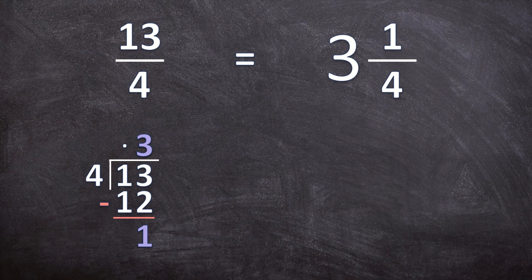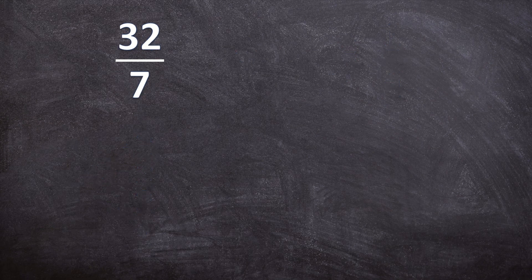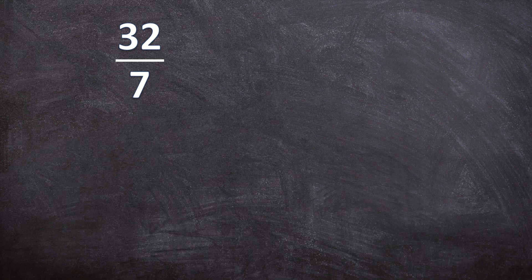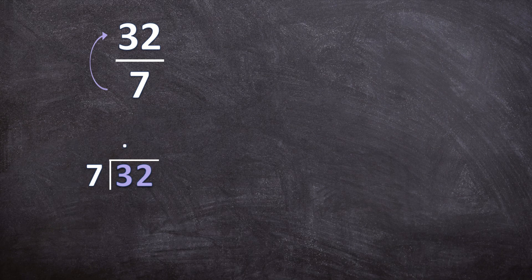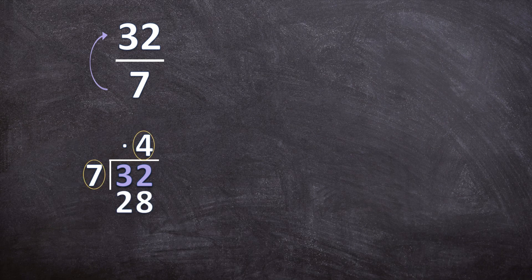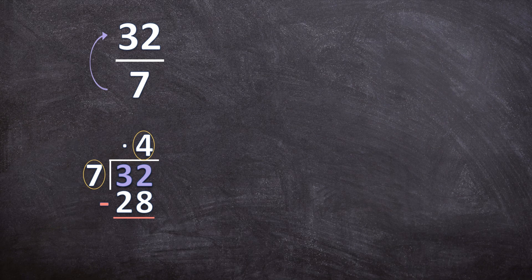Let's look at another example. Here we have 32 over 7. Again I'm going to do the division separately. So how many times can 7 go into 32? 7 cannot go into 3. So how many times can 7 go into 32? 7 can go 4 times into 32. Now we multiply: 4 times 7 is 28. Now we subtract: 32 minus 28 is 4.